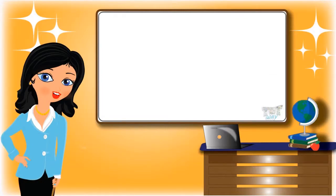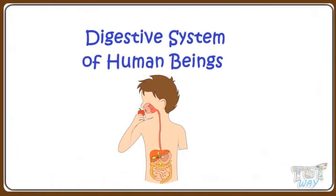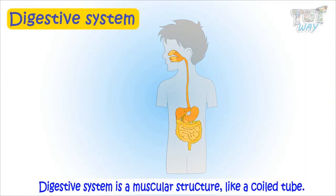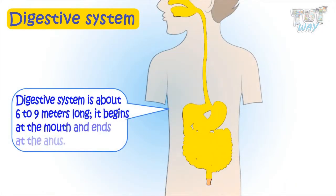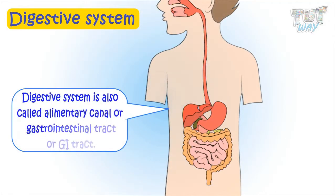Hi kids! Today we will learn about the digestive system of humans. So let's start. The digestive system is a muscular structure like a coiled tube, which is about 6 to 9 meters long. It begins at the mouth and ends at the anus. It is also called alimentary canal, or gastrointestinal tract, or GI tract in short.